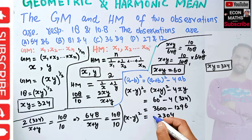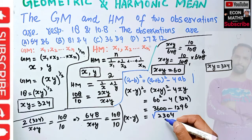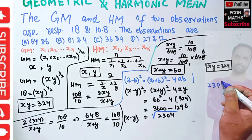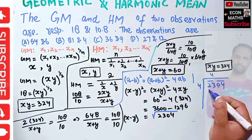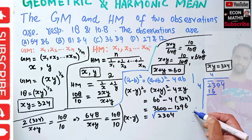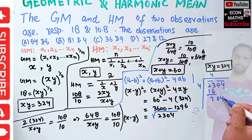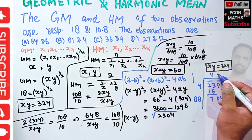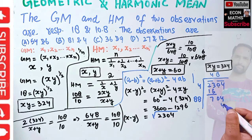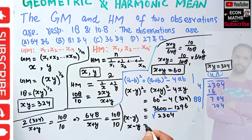So (x − y)² = 2304. Taking the square root, we need √2304. Working this out: 48 times 48 — 8 times 8 is 64, carry 6; 8 times 4 plus 6 is 70 — gives 2304. So √2304 = 48, which means x − y = 48.